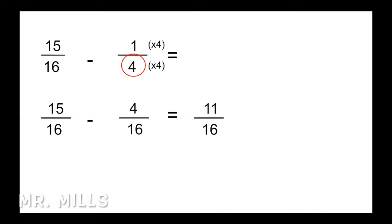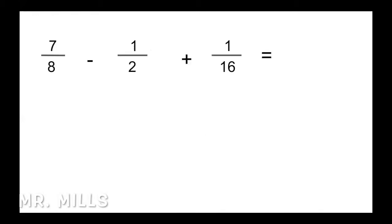Remember: find the common denominator, then expand the fraction that needs to be expanded, and do the math across the top. In this next problem with three different fractions, we go with the biggest denominator, which is 16. We need to get 8 to equal 16: 8 times 2 is 16, and what we do to the bottom we do to the top — 7 times 2 is 14.